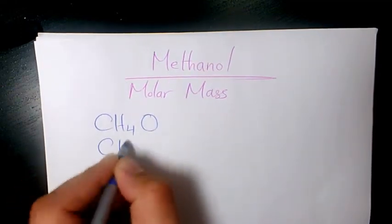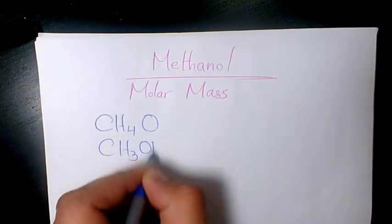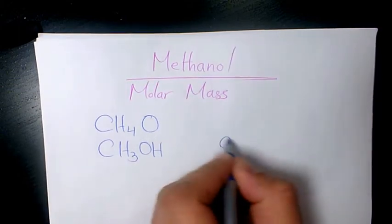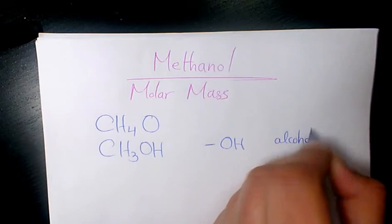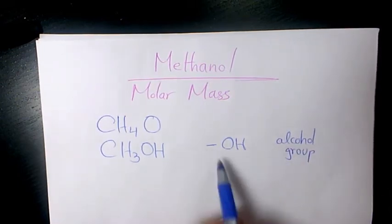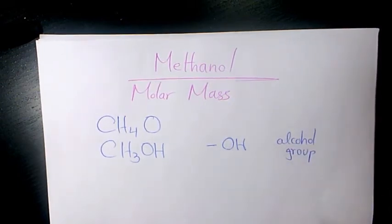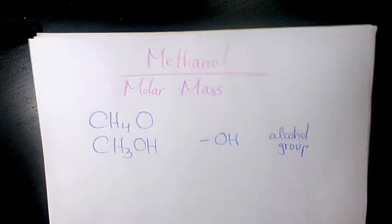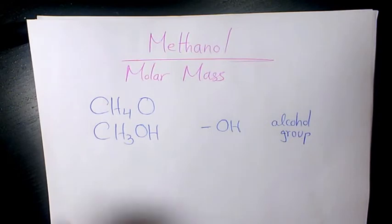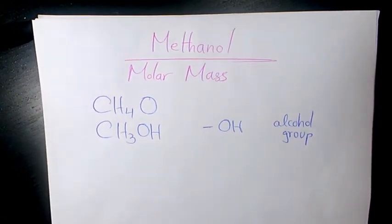You can also write it as CH3OH. The OH group is an alcohol group - all alcohols have an OH or hydroxyl group. Methanol is the simplest alcohol. Now let's find out how to find molar mass.